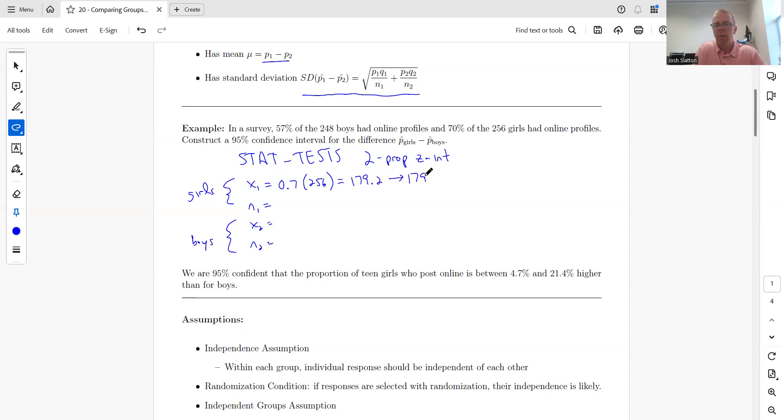So put 179, the number of girls is 256. Then do the same thing for the boys: 0.57 times 248 gives 141.36. We're going to round that to the nearest integer, which is 141, and then n is 248.